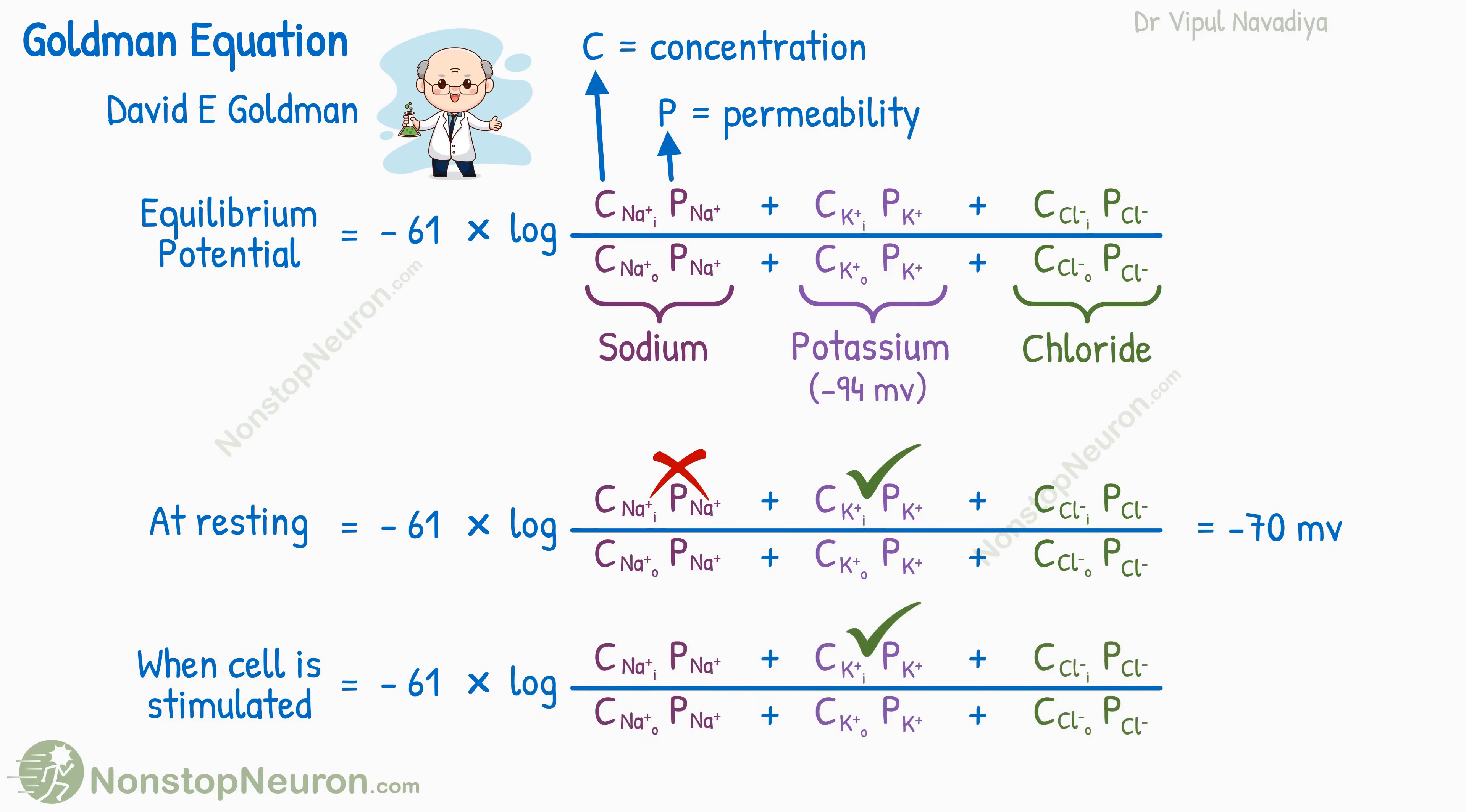However, when the cell is stimulated, the sodium channels also open, and they also contribute to the potential. As the equilibrium potential for sodium is plus 61 millivolts, overall there is a shift toward a positive direction. And that's the reason why we see depolarization in action potential. So now you know the math behind depolarization also.